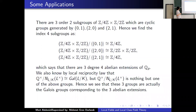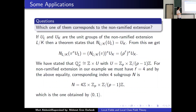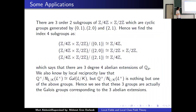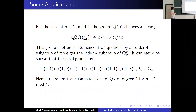One might ask which of these 3 extensions corresponds to the unramified extension. The norm map sends units to units. Since Q_p* decomposes as stated and units take a specific form, the norm map does not change the unit part. The corresponding index 4 subgroup is generated by the element from the Z component, which comes from the unramified part. For p congruent to 1 mod 4, only one thing changes: the group becomes Z/4 × Z/4, of order 16. You need to quotient by order 4 subgroups, and you find there are 7 such groups — 6 have Galois group Z/4, and only 1 has Galois group Z/2 × Z/2.